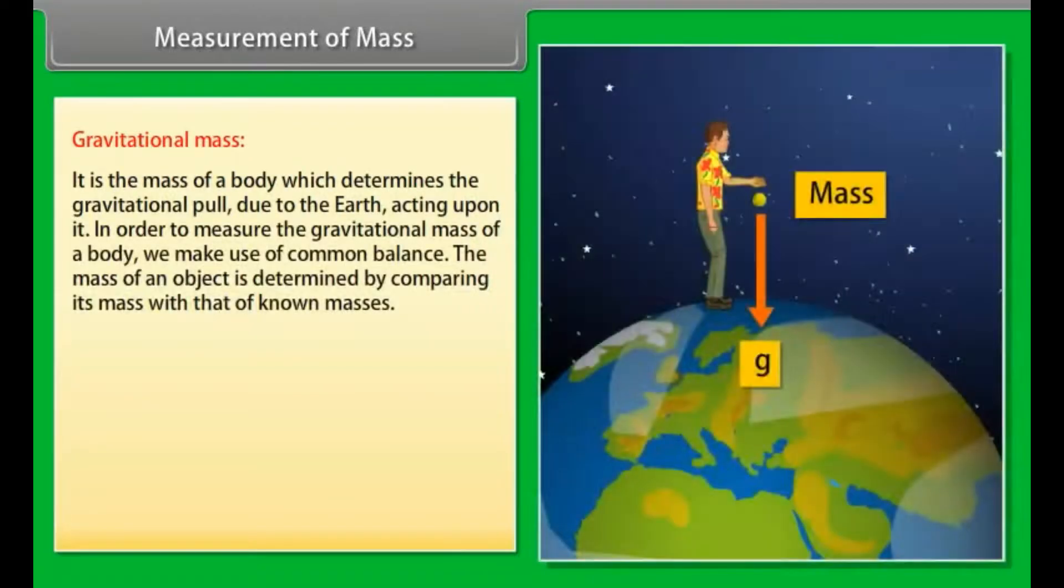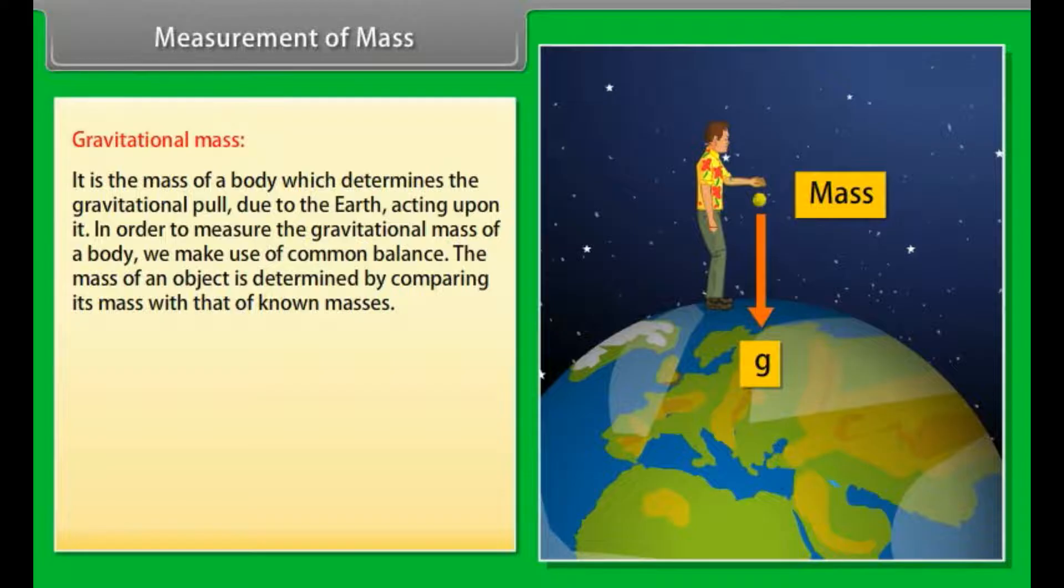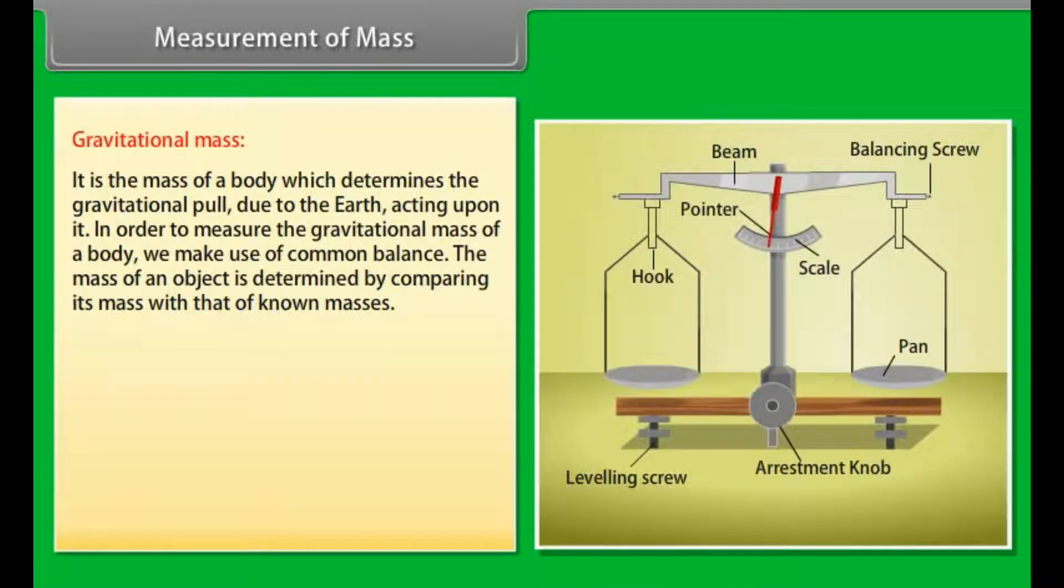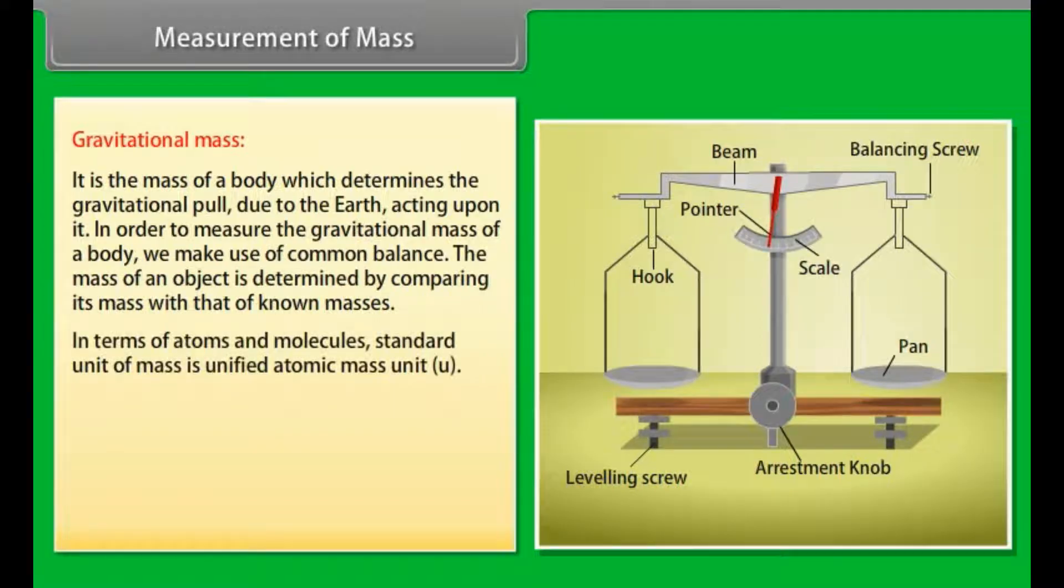Gravitational mass. It is the mass of a body which determines the gravitational pull due to the earth acting upon it. In order to measure the gravitational mass of a body, we make use of common balance. The mass of an object is determined by comparing its mass with that of known masses.